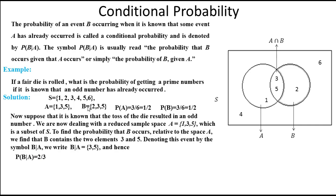When dealing with unconditional probability, P(B) equals three by six because those three outcomes from the sample space relate to our event B, the prime numbers. But when given the additional information that event A has already occurred, we have no concern with the full sample space. We now deal with the reduced sample space A = {1, 3, 5}, and searching for event B within it, only three and five qualify, so P(B|A) = 2/3.